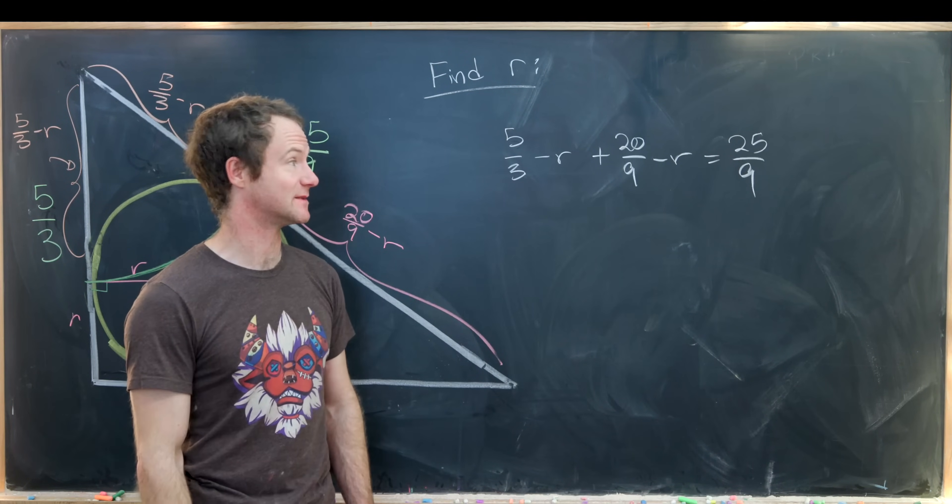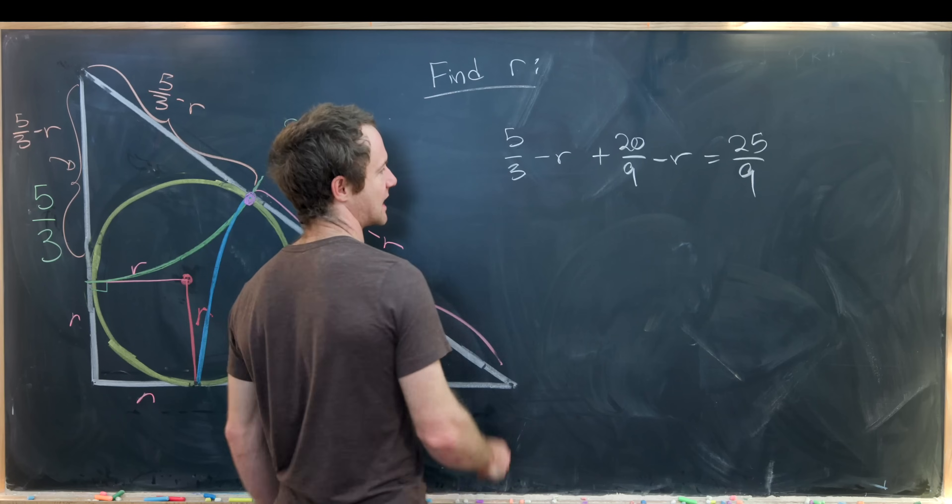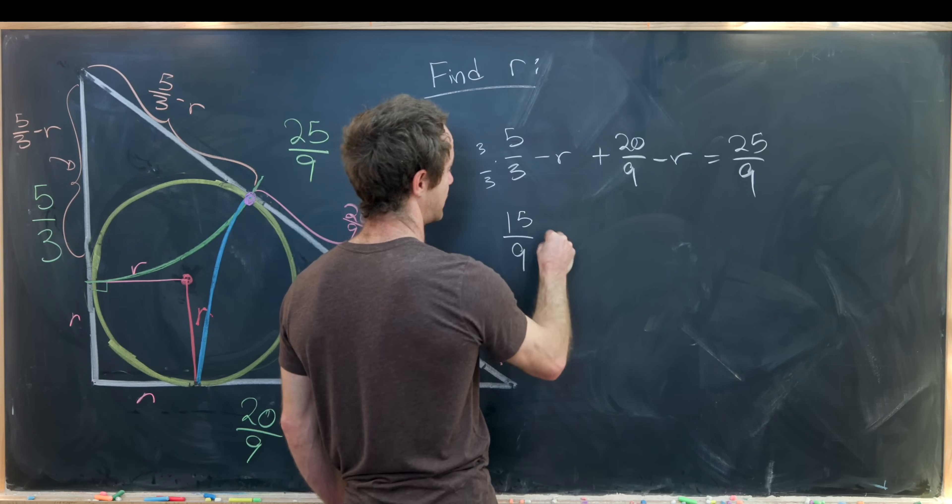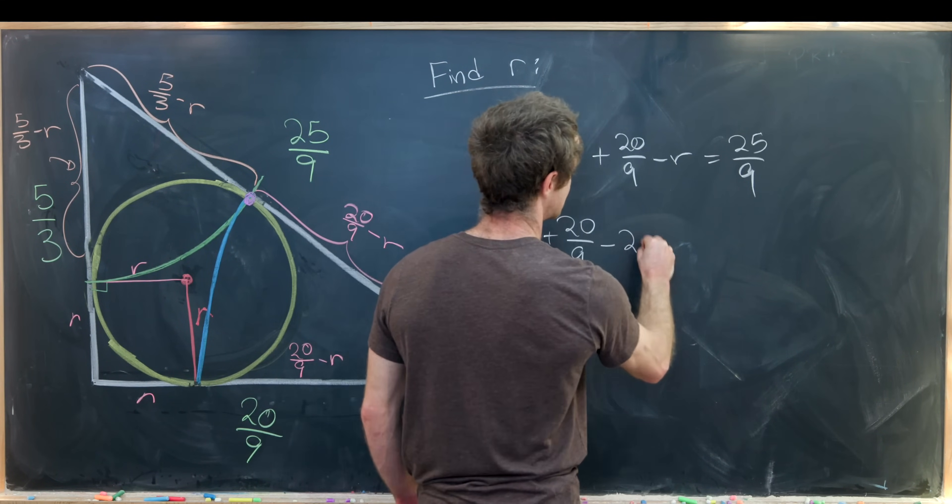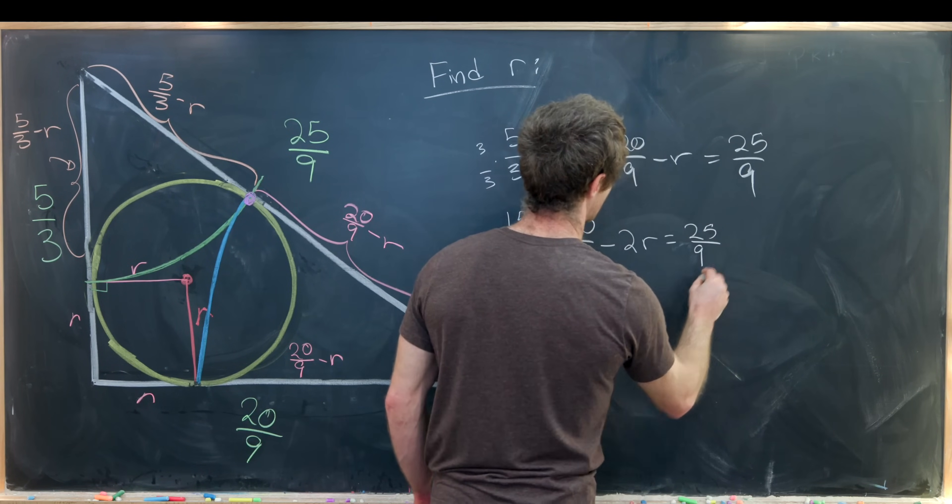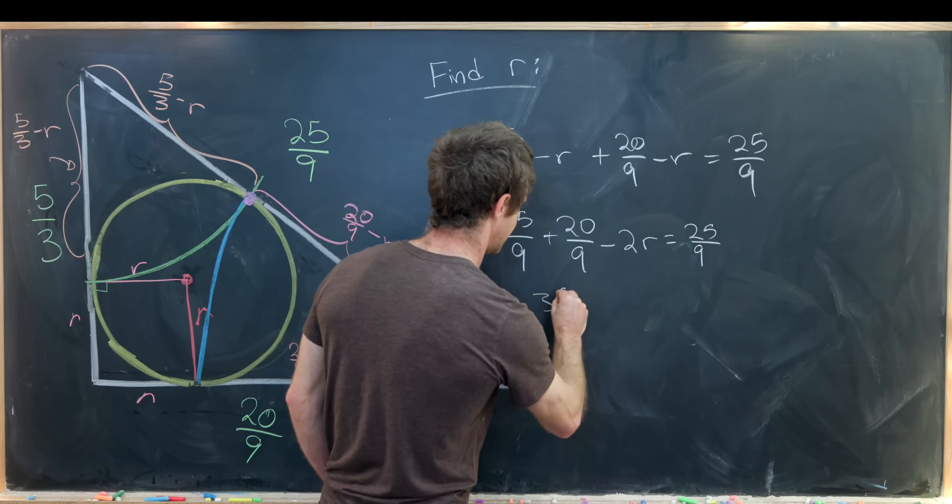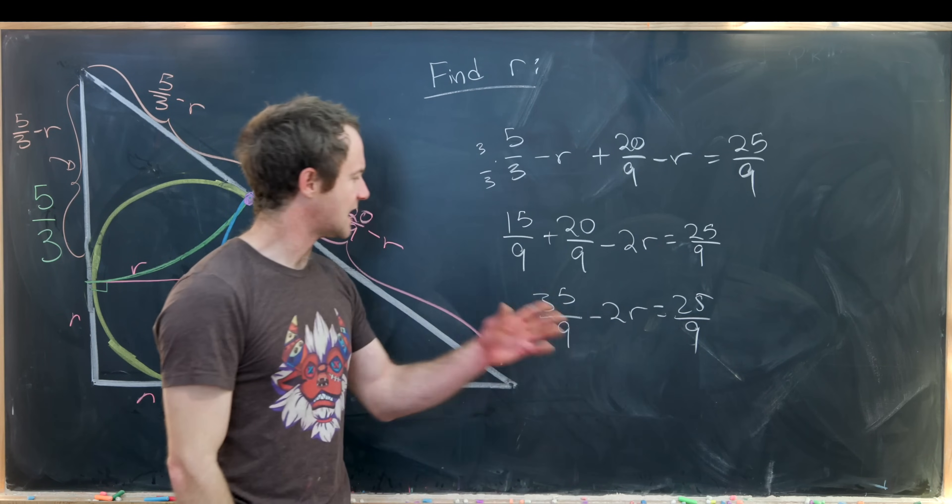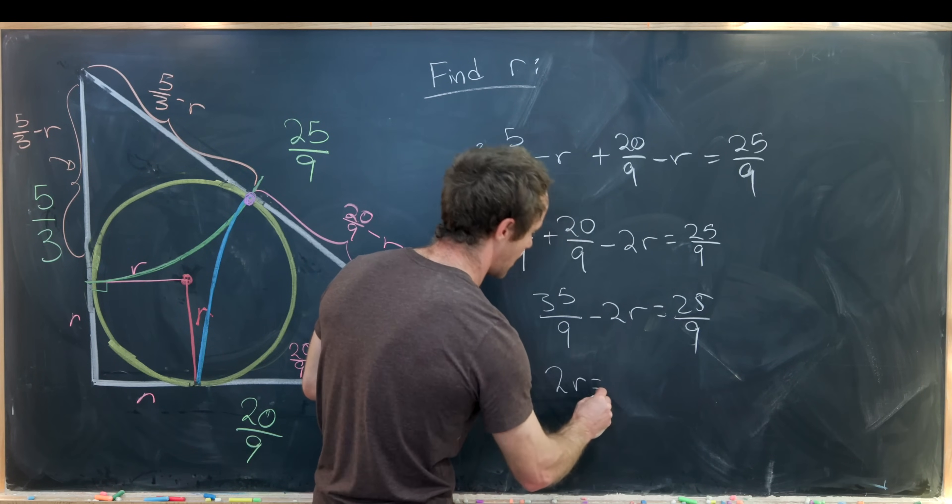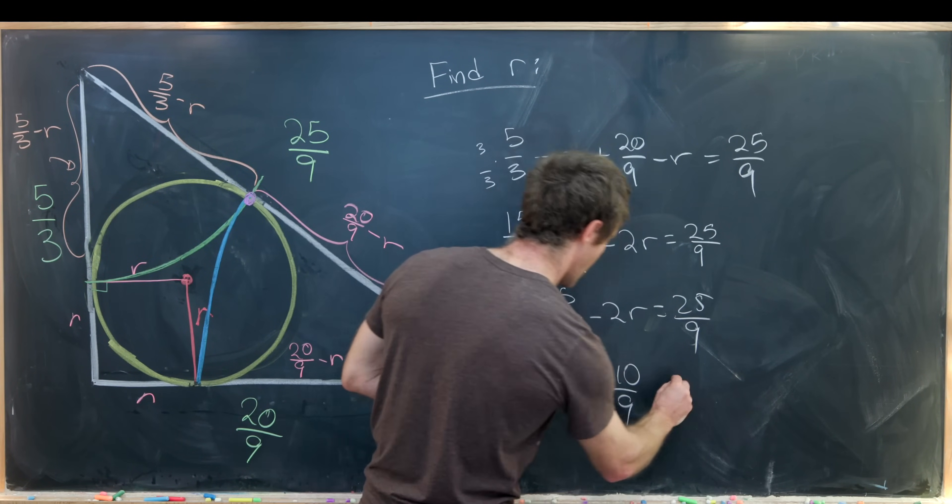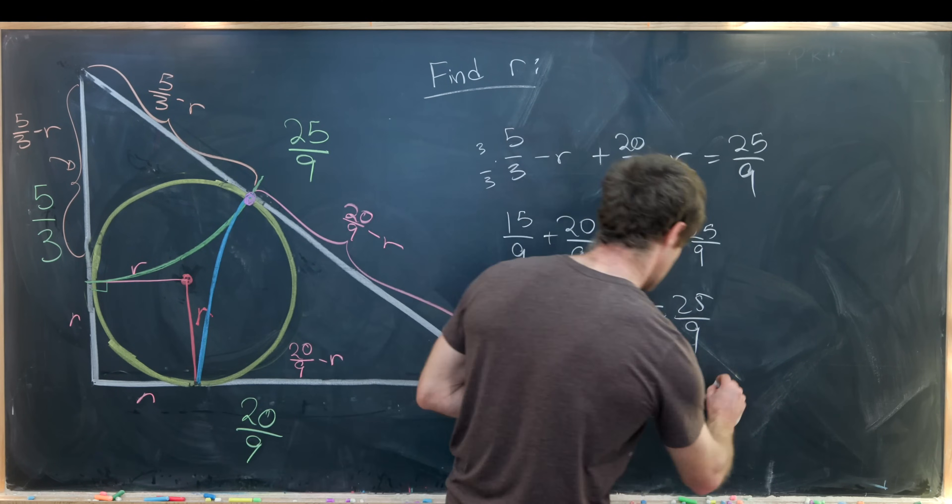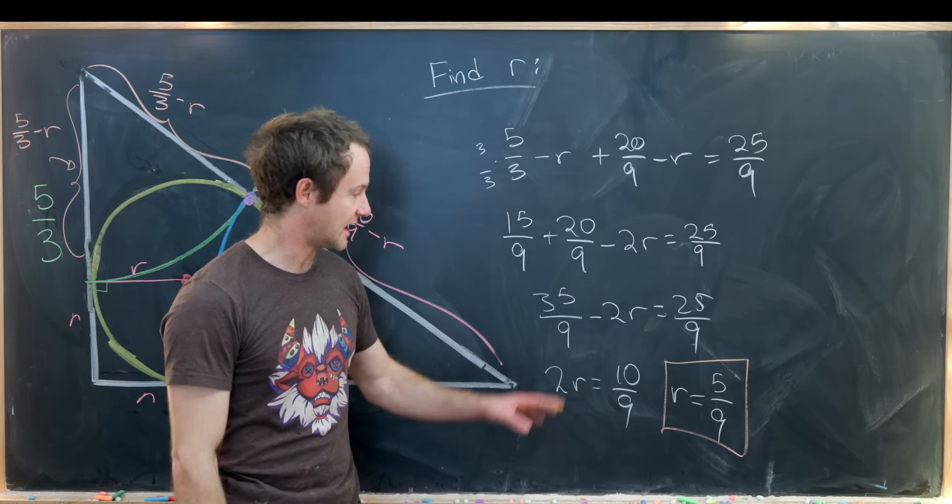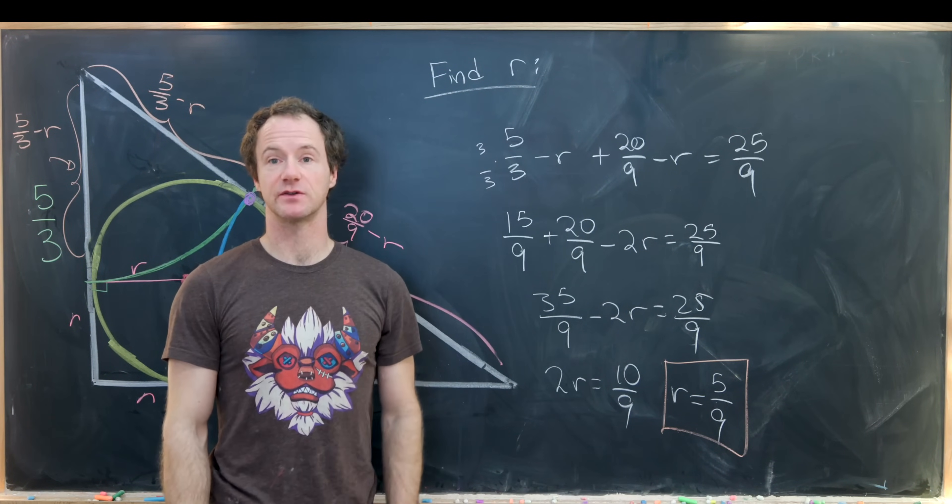Now we've got a nice equation which is fairly simple to solve. Let's give ourselves a common denominator by multiplying this by 3 over 3. That will give me 15 over 9 plus 20 over 9 minus 2 times r equals 25 over 9. That gives us 35 over 9 minus 2r equals 25 over 9. We can move some things around and we'll see that we get 2r equals 10 over 9, or r is equal to 5 over 9. And that ends the problem. That's exactly what we wanted to find, the radius of this inscribed circle. And that's a good place to stop.